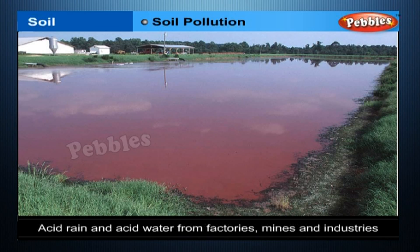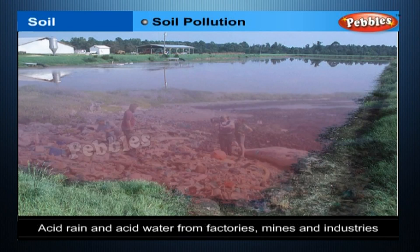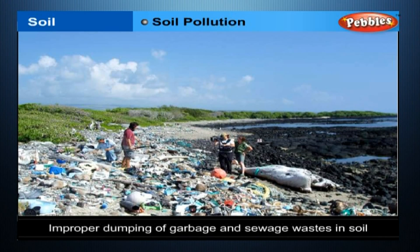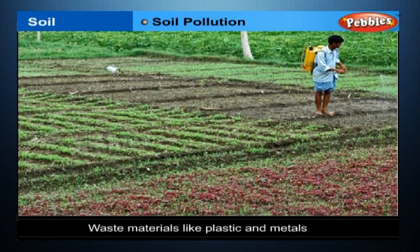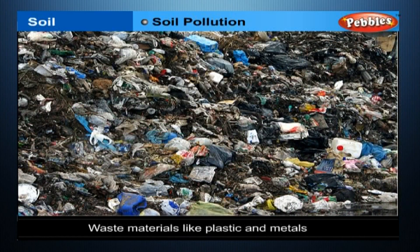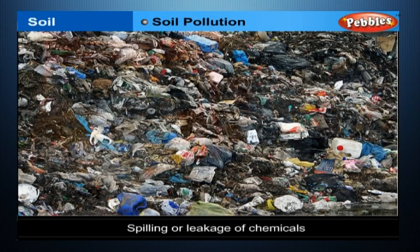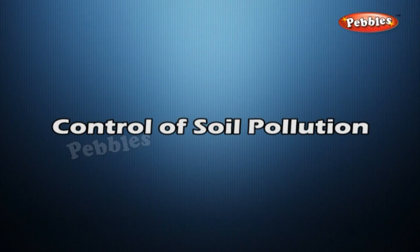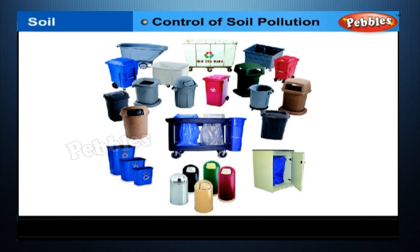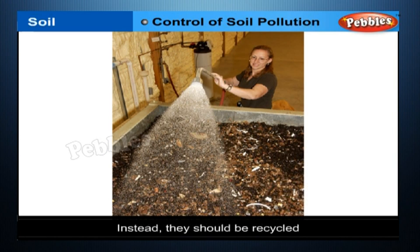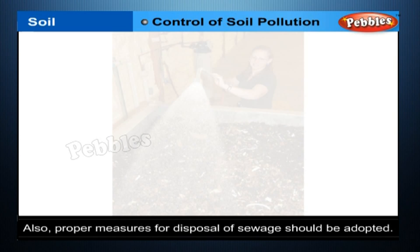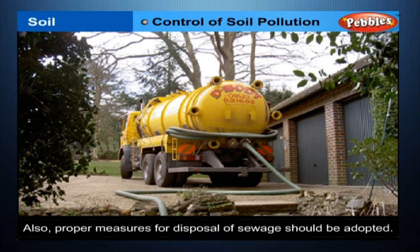Soil Pollution — The major sources include: acid rain and acid water from factories, mines and industries; improper dumping of garbage and sewage wastes in soil; excessive use of pesticides and fertilizers which get accumulated in soil; waste materials like plastic and metals which do not decay easily; and spilling or leakage of chemicals. To control soil pollution: solid wastes should not be dumped on land but should be recycled, proper measures for disposal of sewage should be adopted, and animal and domestic wastes should be used to produce biogas.